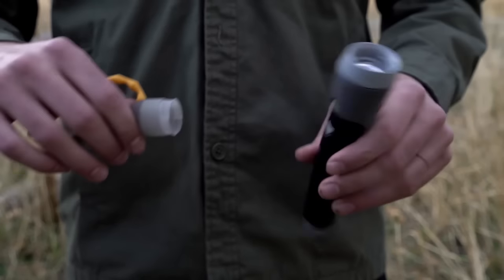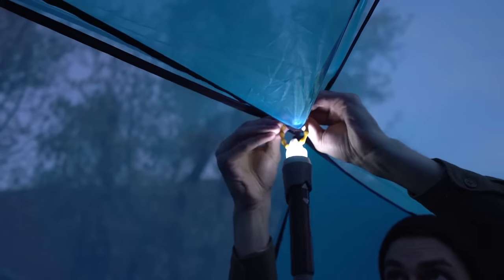The flashlight is a 1-watt dimmable LED that can run for 4 hours on full bright. The removable lid doubles as a diffuser, transforming the light into a lantern.